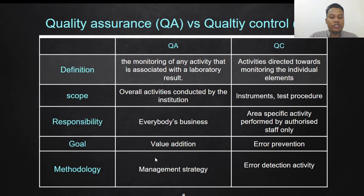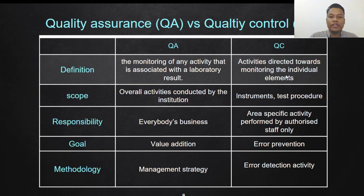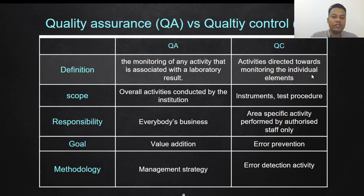The methodology for QA consists of management strategy — having programs and plans on how to achieve good quality results through well-planned quality assurance. As for quality control, it is activities directed towards monitoring individual elements. In QA, we have all elements from collecting the sample to production of results and record keeping, even inventory of reagents. In QC, we look at individual activities one by one as they are being done.